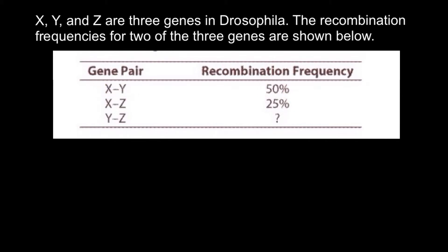So imagine that this is two genes. Here is gene X and here we have gene Y. And between X and Z we have 25% recombination frequency, and where we can put gene Z.